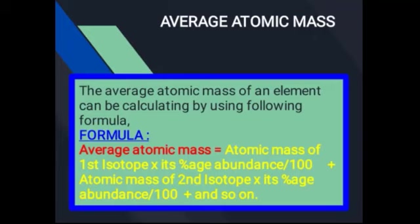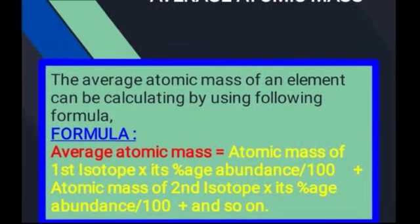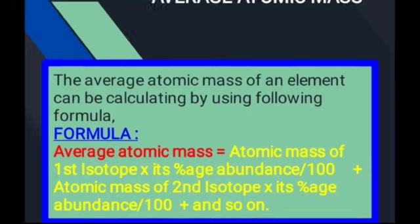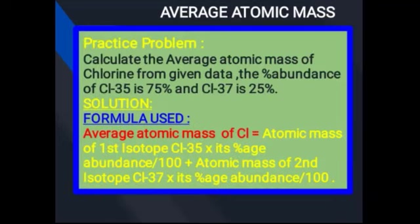The average atomic mass of an element can be calculated using the following formula: Average atomic mass = (atomic mass of first isotope × percent abundance / 100) + (atomic mass of second isotope × percent abundance / 100)۔ اگر دو isotopes ہیں تو یہ formula دو تک use کریں، اگر تین یا زیادہ isotopes ہیں تو formula کو آگے proceed کر سکتے ہیں۔